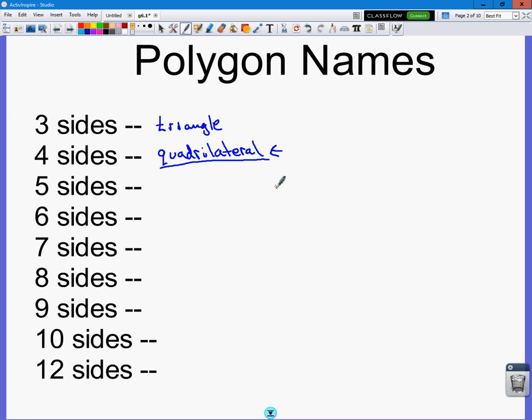It is a quadrilateral, and I'm telling you why we're working on polygons. We are going to spend most of our time talking about quadrilaterals because there's so many different classifications, and they all have different properties. Five sides. Pentagon. Six sides. Hexagon.